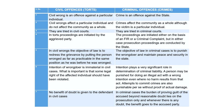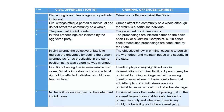Let us understand the difference between civil offenses and criminal offenses. A civil offense is one acting against one particular individual, affecting one particular person. Whereas a crime is an offense against the state. So civil offenses are known as private wrongs, whereas criminal offenses are known as public wrongs because they affect a larger section of society. Civil wrongs affect a particular individual and do not affect the community as a whole.